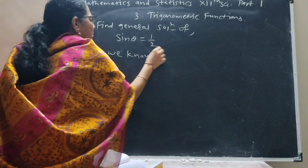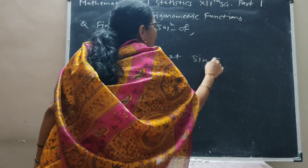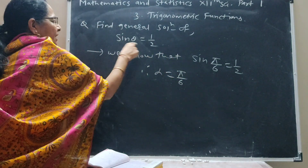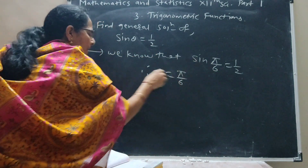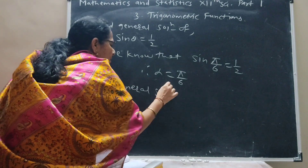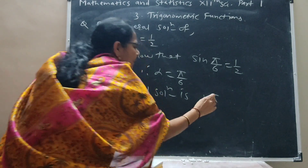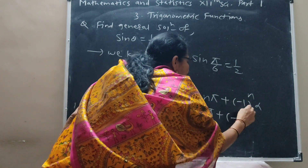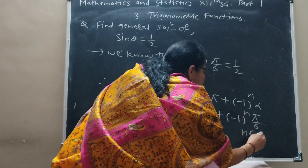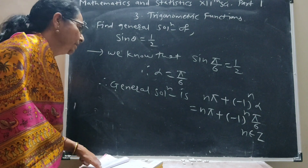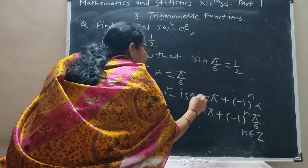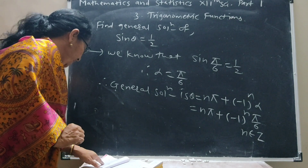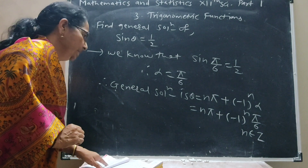We know that sine of pi by 6 is equal to half. Therefore, alpha is equal to pi by 6. The general solution is theta equal to n pi plus minus 1 raised to n times alpha, where alpha is pi by 6. So the general solution is theta equal to n pi plus minus 1 raised to n times pi by 6, where n belongs to Z.